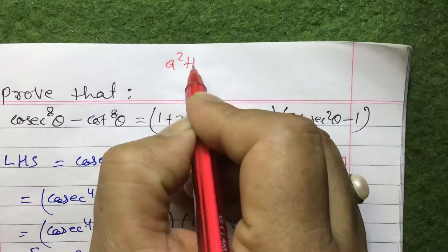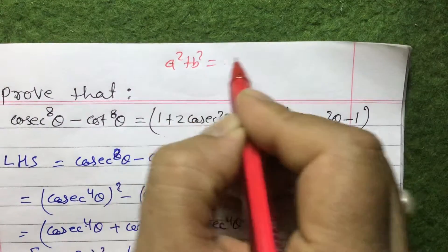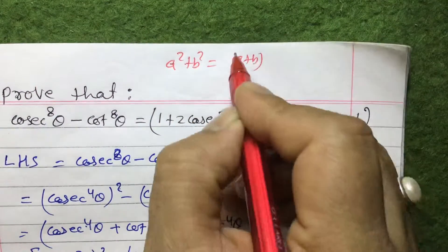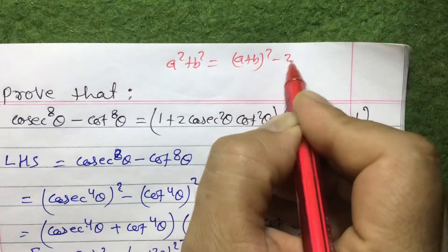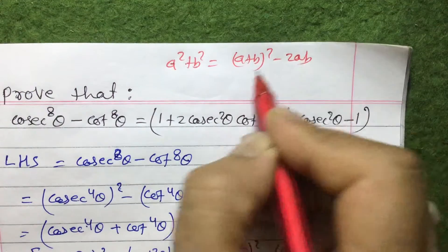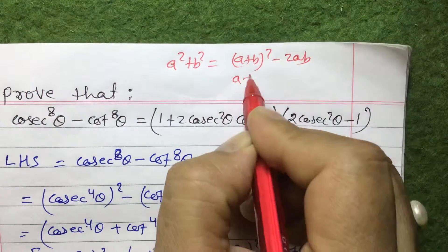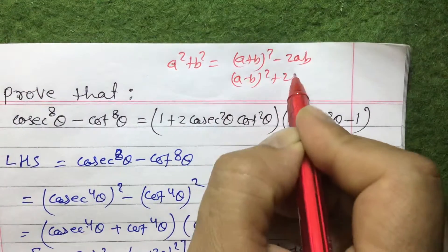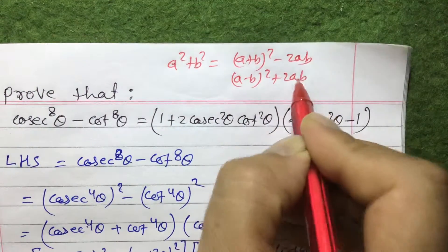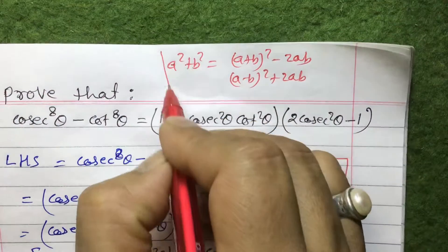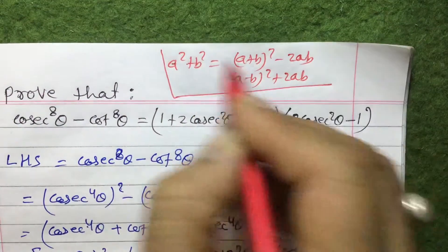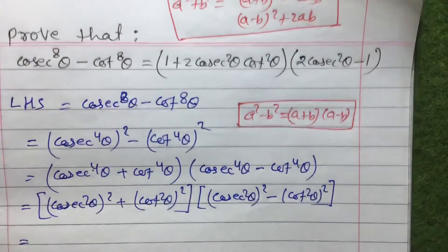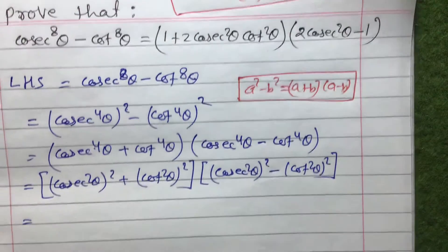For a² + b², we have two formulas: a² + b² = (a + b)² - 2ab, and a² + b² = (a - b)² + 2ab. We need to decide which formula to use here.